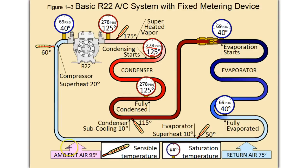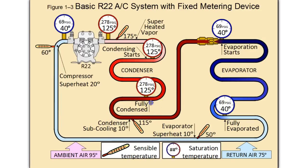As the saturated refrigerant moves through the condenser it begins to condense more and more — at this point it could be 75% liquid and 25% vapor, still at its saturation point. It will travel through the condensing unit until it hits the point where it is fully condensed, meaning 100% liquid with no more vapor. The region between where condensing starts and where the refrigerant is fully condensed is where all of the latent heat is shed as it changes state from vapor to liquid.